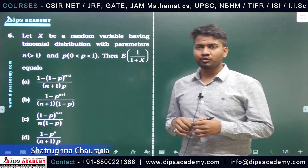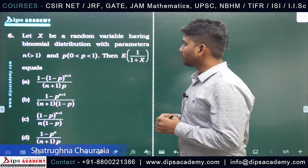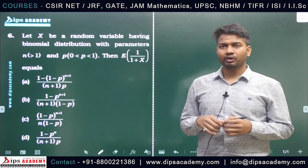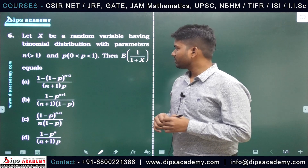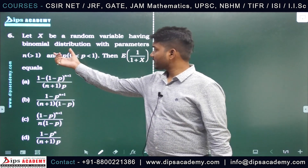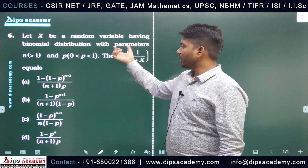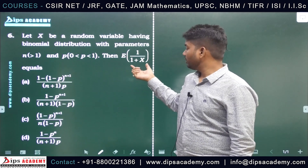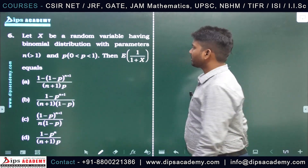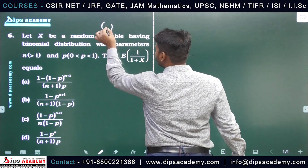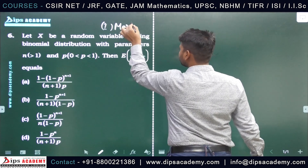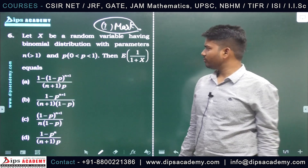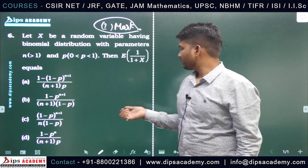Hello everyone, welcome to the YouTube channel of DIPS Academy. Today I am going to solve question number six of IIT JAM MS22. This question involves a random variable having binomial distribution. There is one formula involved which is not so well-known, that's why I am taking this question.